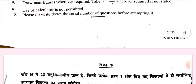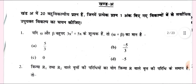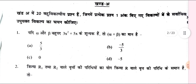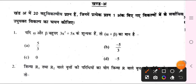The official answer will come in the evening. In the evening, you can check your answers. For question number 1, the correct answer will be option B — minus 5 upon 3.